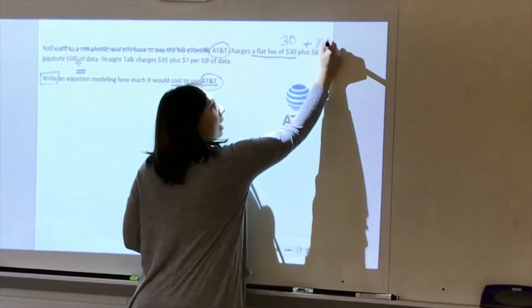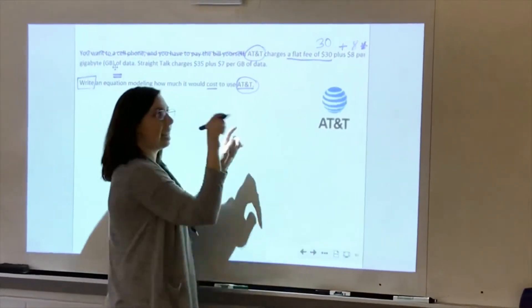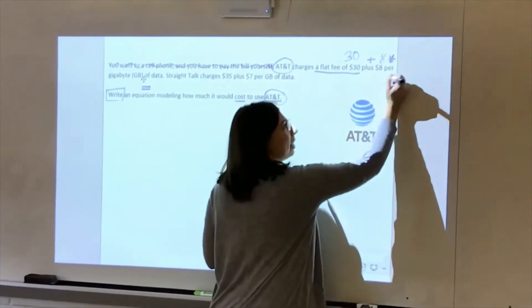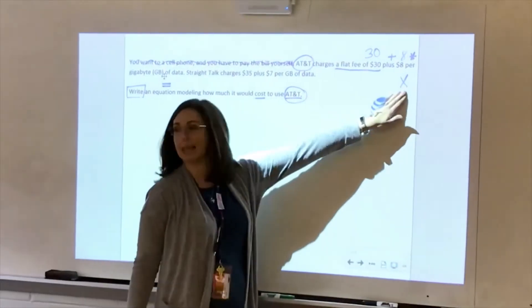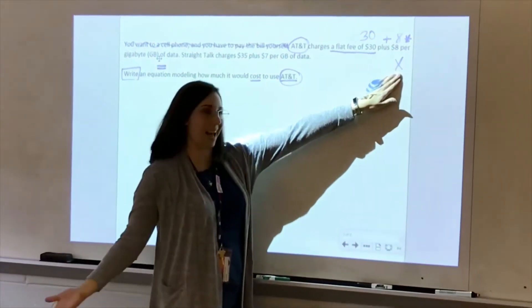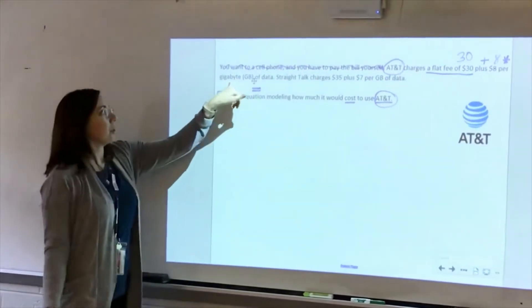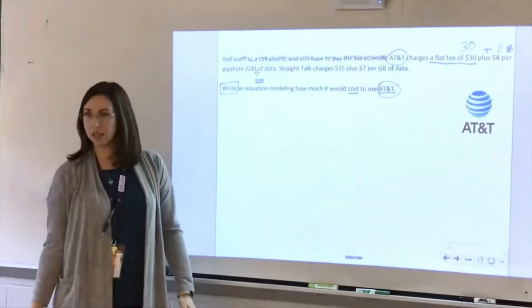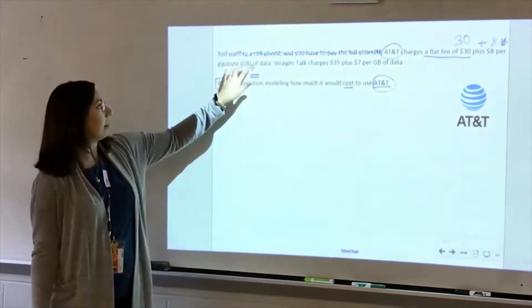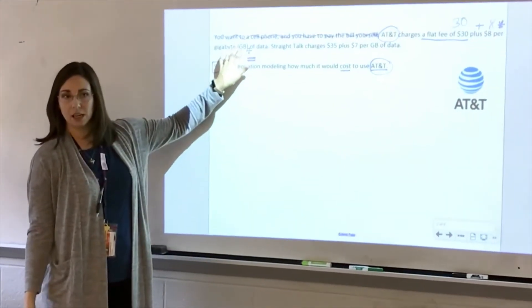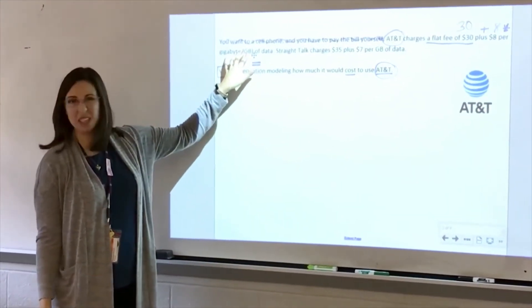So $8 times - I'm using an asterisk because if I put this symbol for times, what else could that look like? Looks like X, doesn't it? So we don't want to use X anymore. What about gigabyte - do I know how many gigabytes I'm going to be using? No, I do not. So what do we do in math when we have an unknown?